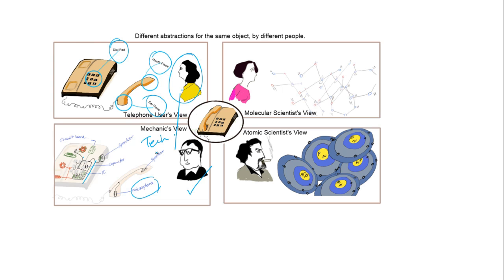These two people have different abstractions about the same object. For a molecular scientist — this is a very hypothetical situation — she might say that you are using integrated circuits and that advances in molecular chemistry allow for better conducting IC circuits. But for an atomic scientist, the same telephone becomes a bunch of atoms and he sees interactions between electrons, protons, and neutrons. However, that level of abstraction is useless because it is not helpful for repairing the telephone or any practical purpose.